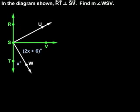we know that the measure of angle TSV is 90 degrees. Since the two parts of angle TSV measure x degrees and 2x plus 6 degrees and angle TSV measures 90 degrees,